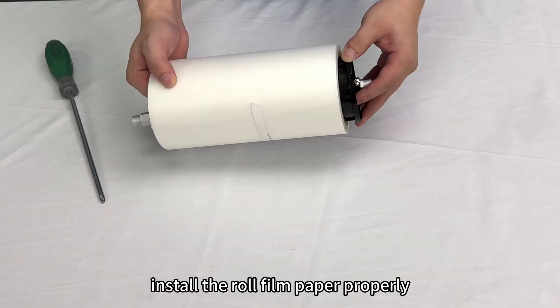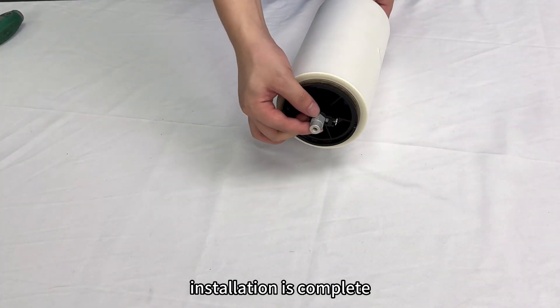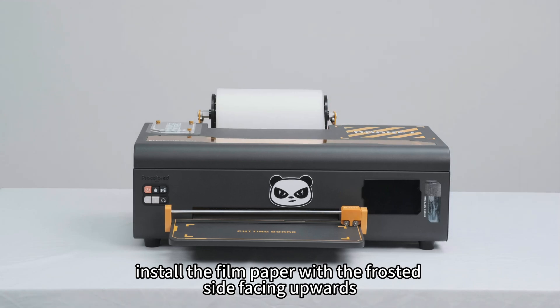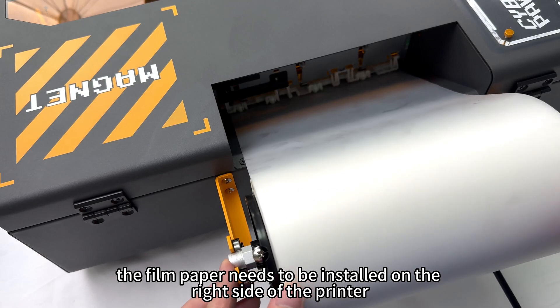Install the roll film paper properly. Install the film paper with the frosted side facing upwards. The film paper needs to be installed on the right side of the printer.